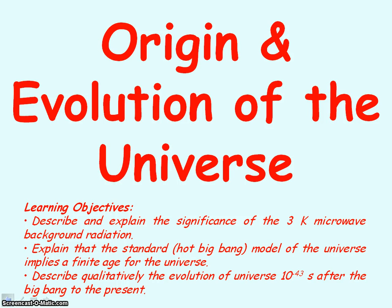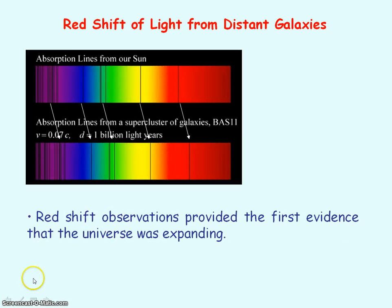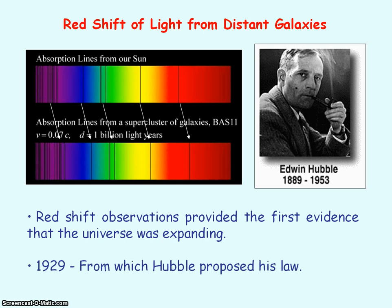We're going to be looking at the origin and evolution of the universe. The red shift of light from galaxies provided the first evidence that the universe was expanding and Hubble proposed his law using this evidence in 1929.